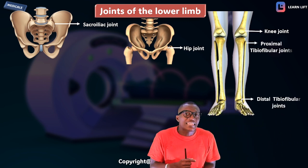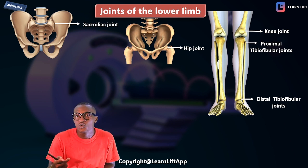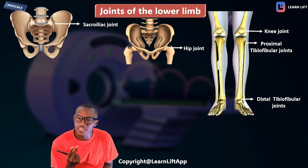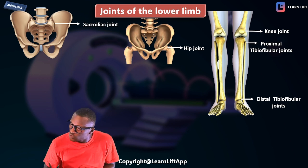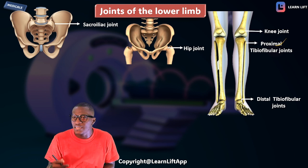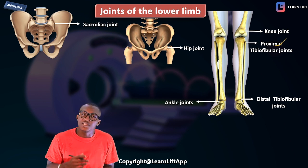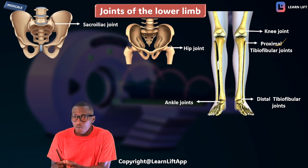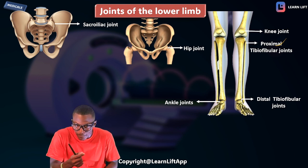There is also the tibiofibular joint, divided into two: the proximal tibiofibular joint and the distal tibiofibular joint — where the two bones meet above and below. The ankle joint is also formed by the malleolus of the tibia, the lateral malleolus of the fibula, and the talus bone.